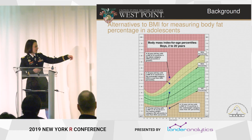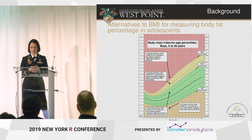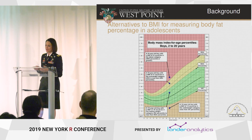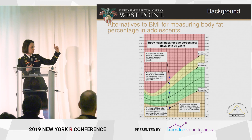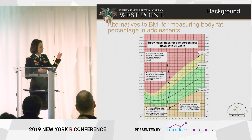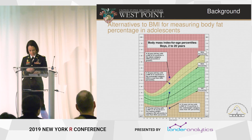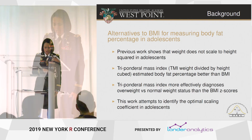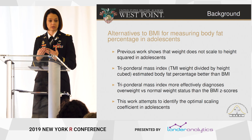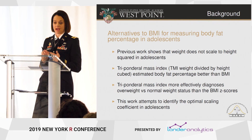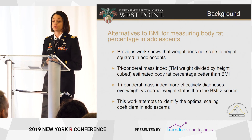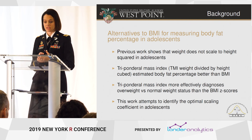Most people in this room can look at this chart and get an idea of what's going on quickly, but you're a lot more used to working with data and graphics than perhaps the American population in general. The cutoffs for BMI change as you age for kids and adolescents, so it's not accessible to a lot of parents. Because BMI is not stable across ages, some previous work done by my collaborators showed that weight doesn't scale to height squared in adolescents — in other words, BMI is not a good indicator of body fat percentage in children and adolescents. They proposed a triponderal mass index — TMI — which is weight divided by height cubed, and found that it estimates body fat percentage better than BMI.